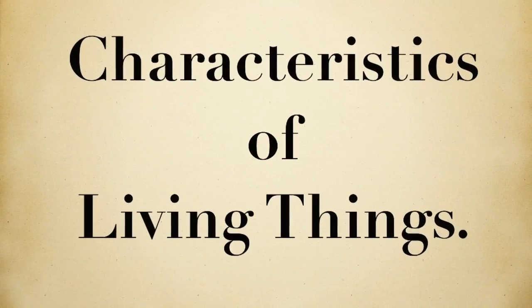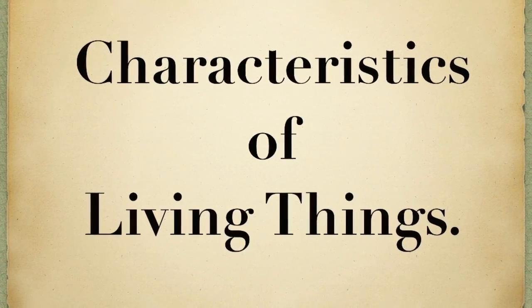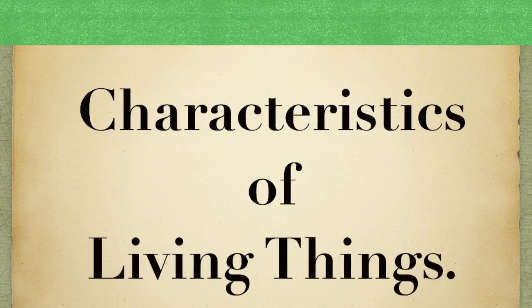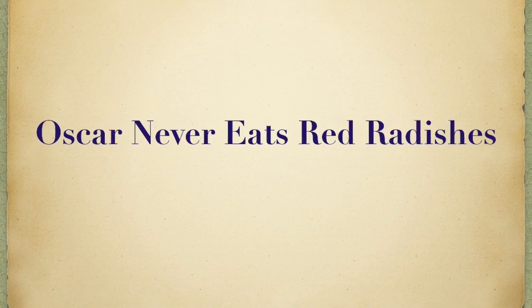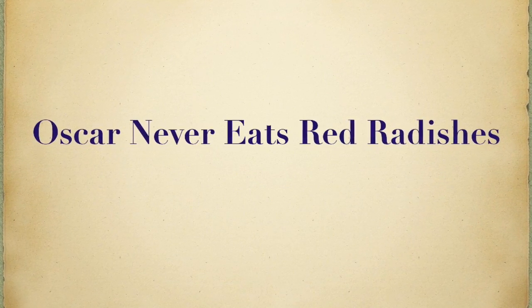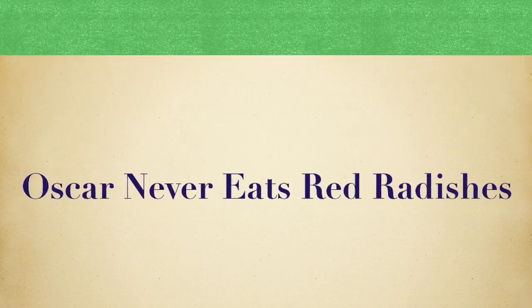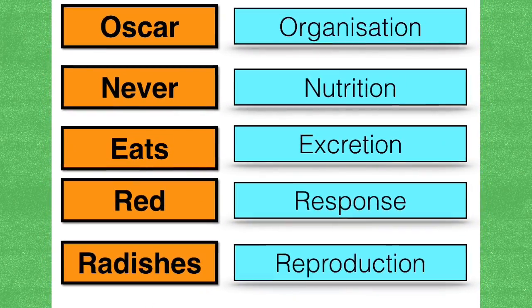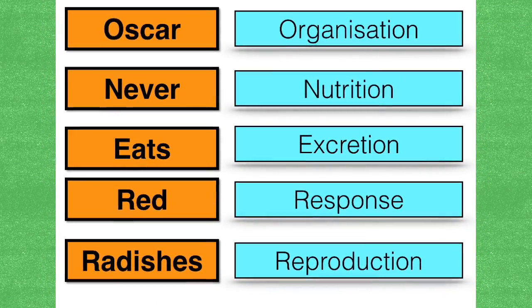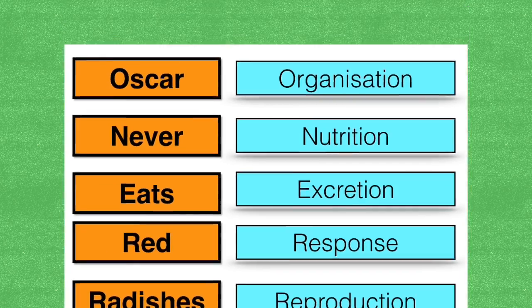The characteristics of living things, geared loosely towards the Irish Leaving Cert syllabus. This rhyme helps remember the five characteristics: Oscar Never Eats Red Radishes. The five characteristics are organisation, nutrition, excretion, response, and reproduction.